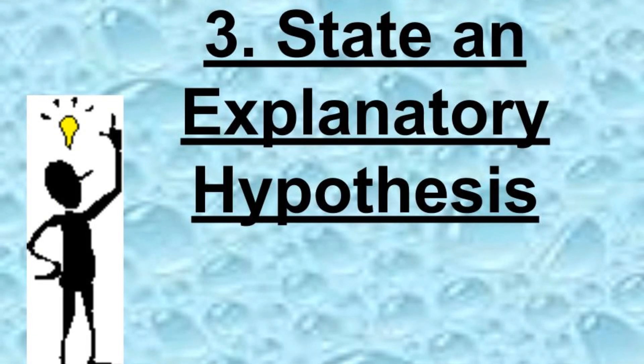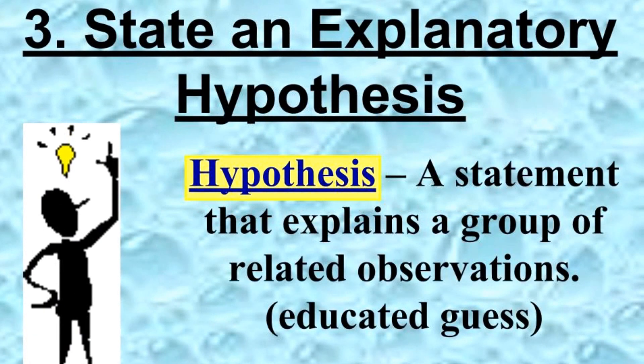Step three is to state an explanatory hypothesis. An explanatory hypothesis is a statement that explains a group of related observations — sometimes called an educated guess. It's really our explanation of what we're seeing. Something in our environment is a little off, we have a question, and we think about why it works that way. So for our radio, my hypothesis might be: I think it's not working because it's not plugged in.